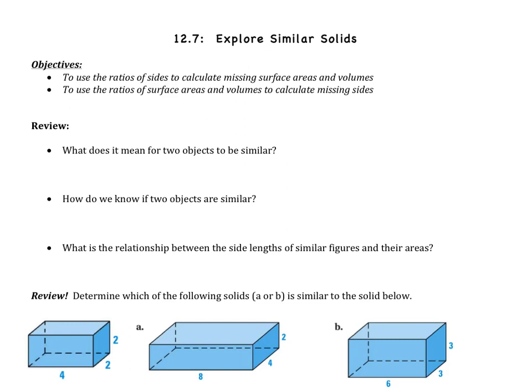Section 7 is about similar solids. This is something that we did in chapter 11 and chapter 6, so now we're doing it again. Two objectives: the first one is to use the ratio of sides to calculate missing surface areas and volumes. Then we're going to use the ratios of surface areas and volumes to calculate missing sides — basically calculating ratios, setting up a proportion, and solving using cross products.